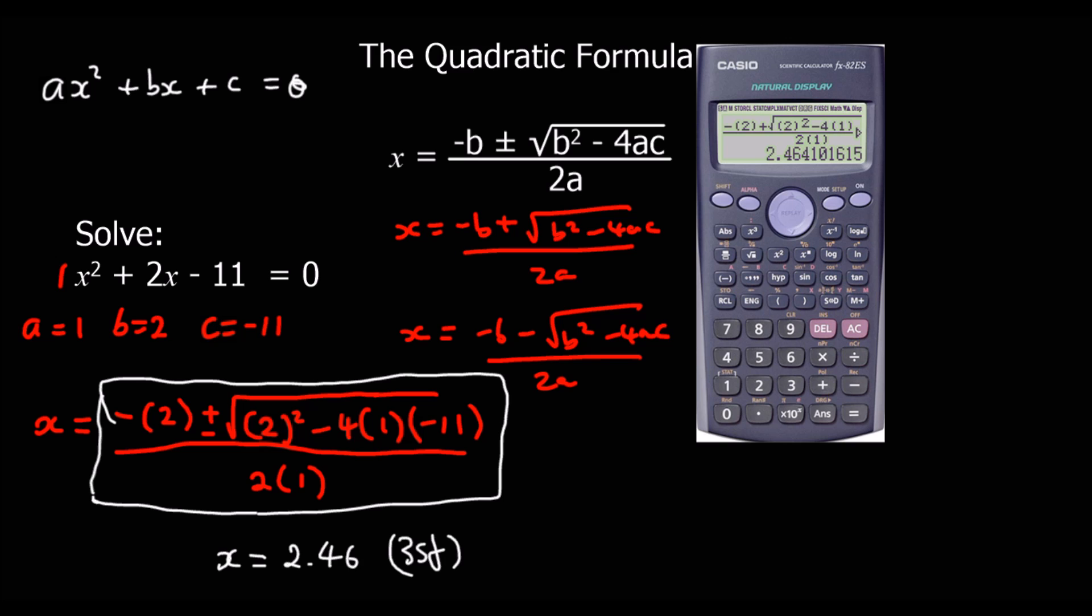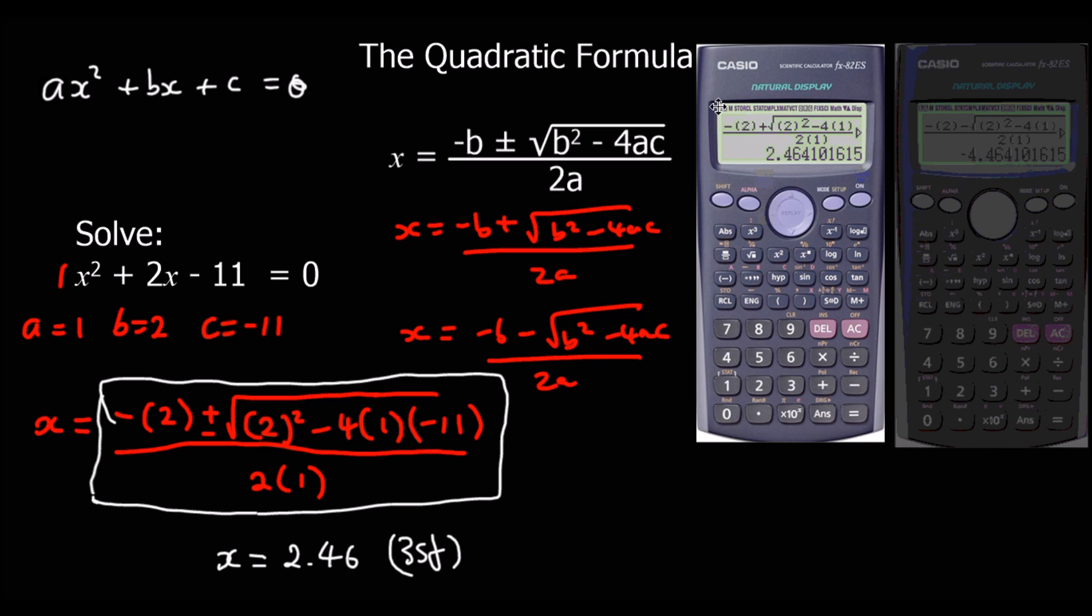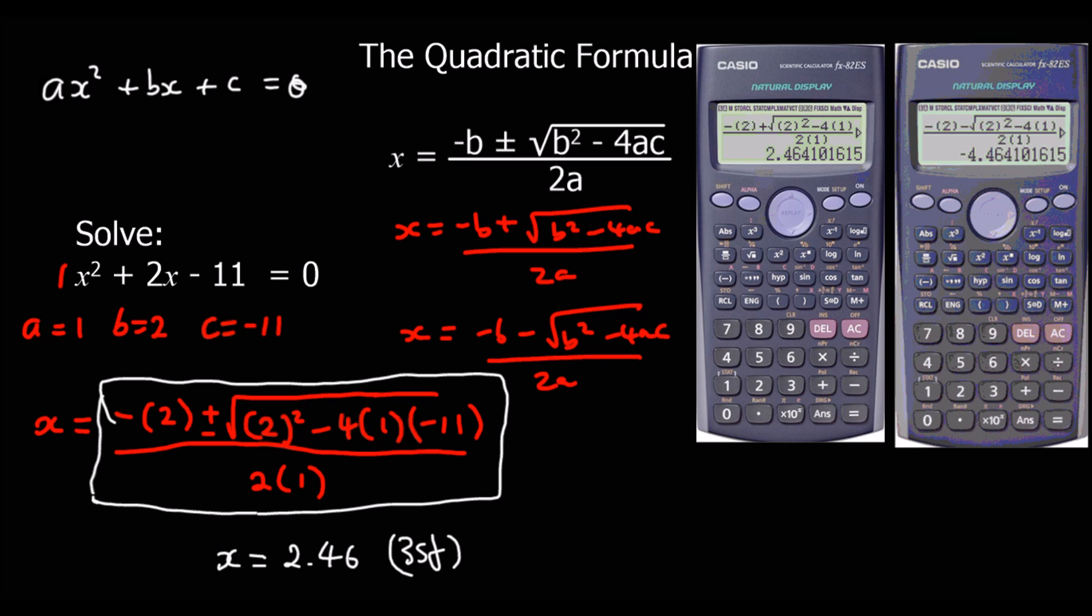And then what we do is we can use this button here, go back into it, and change that to a minus. And then once we've changed that to a minus, we get the other answer, which is minus 4.46 to 3 significant figures.